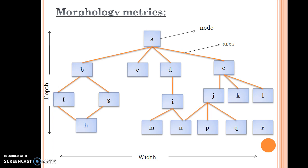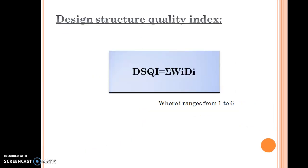Design structure quality index is very useful in measuring the design quality of a program. It is defined by the formula DSQI equals sigma of W(i)D(i), where i ranges from 1 to 6. The value of design structure quality index for past designs can be determined and compared to a design which is currently under development.